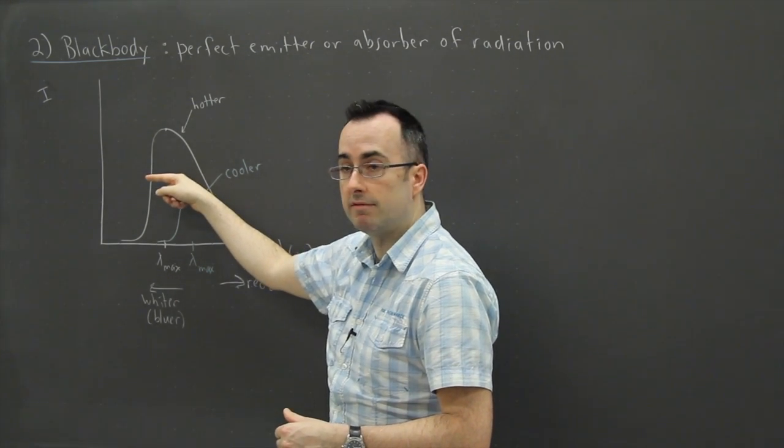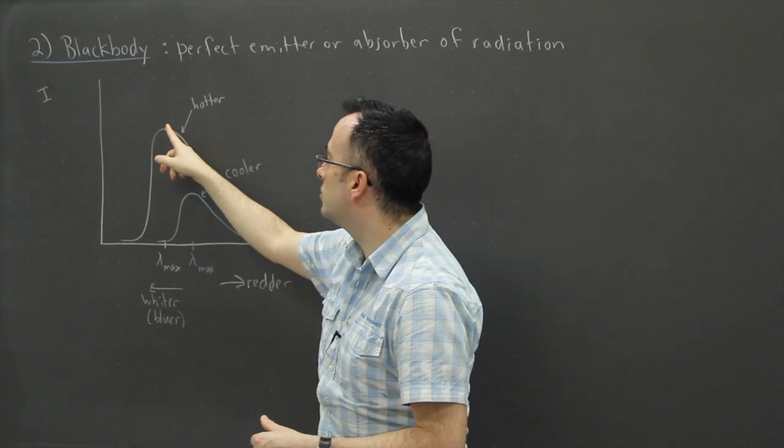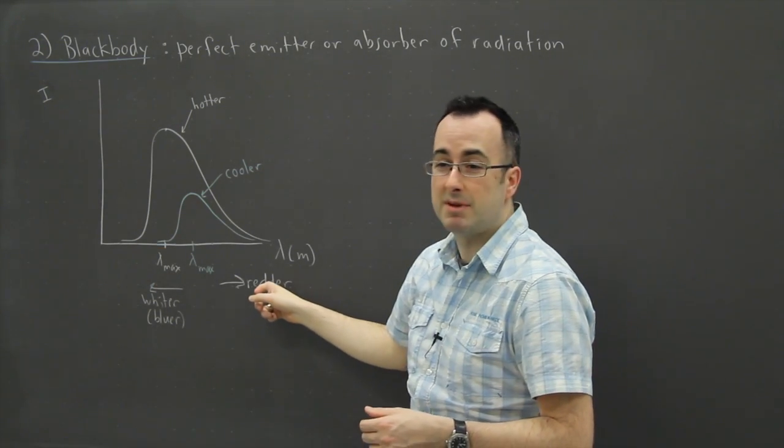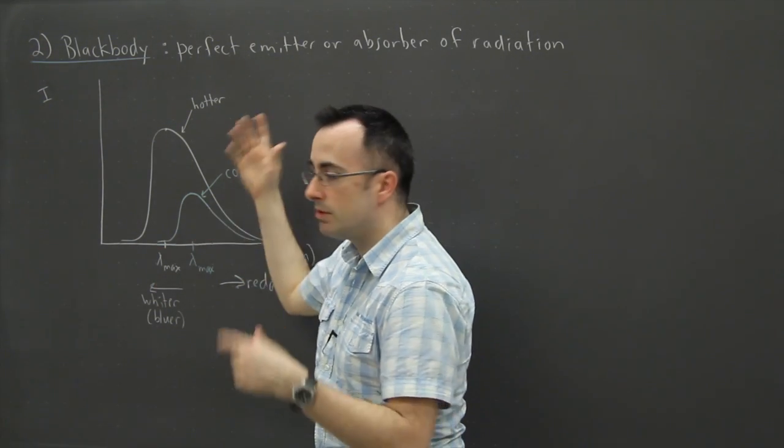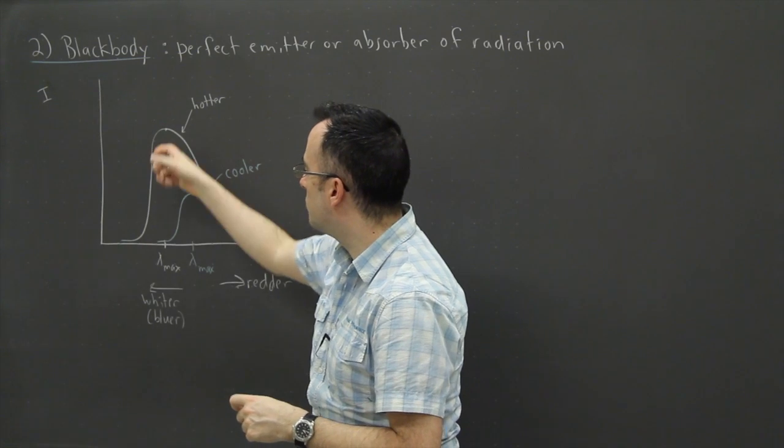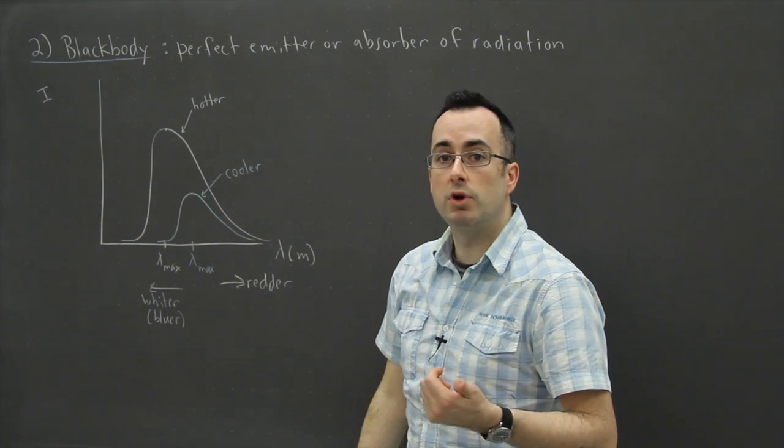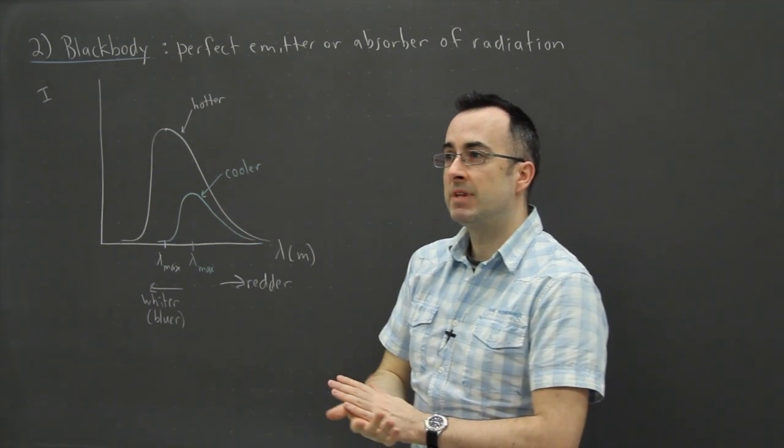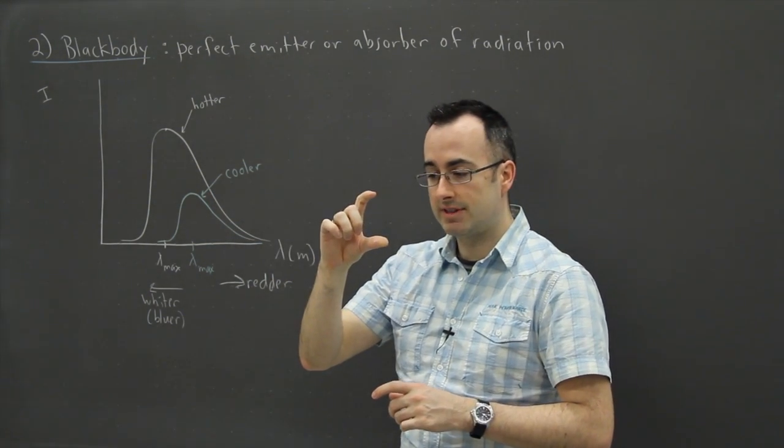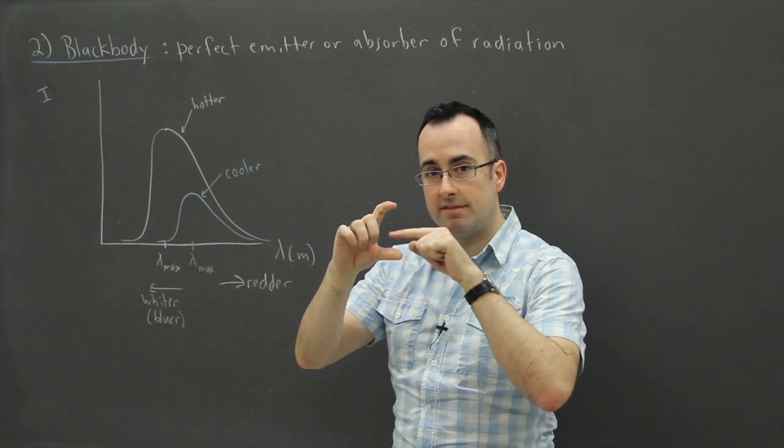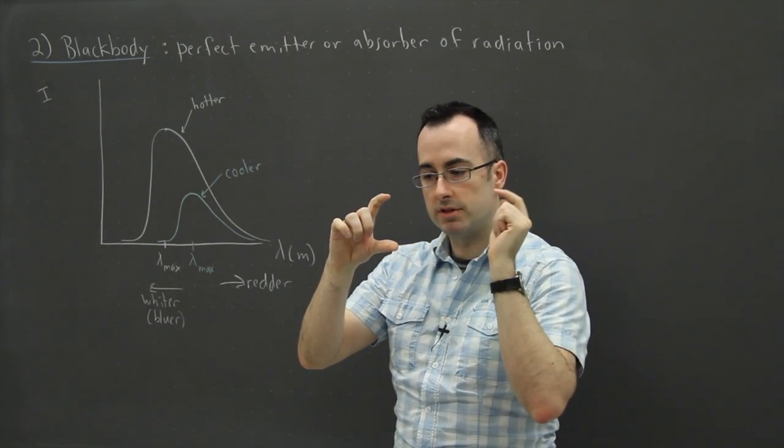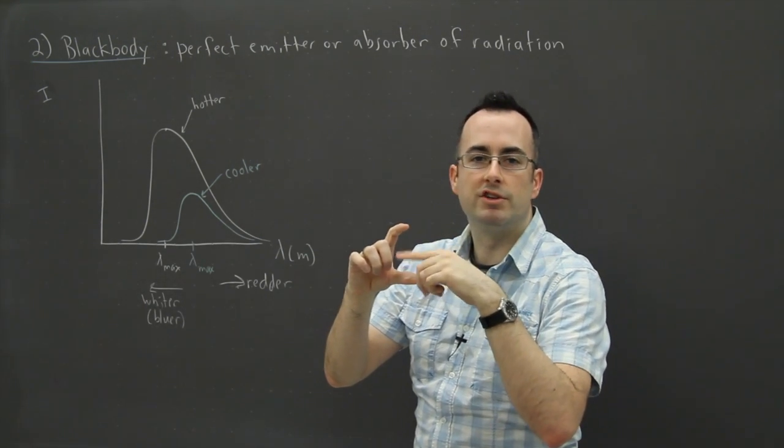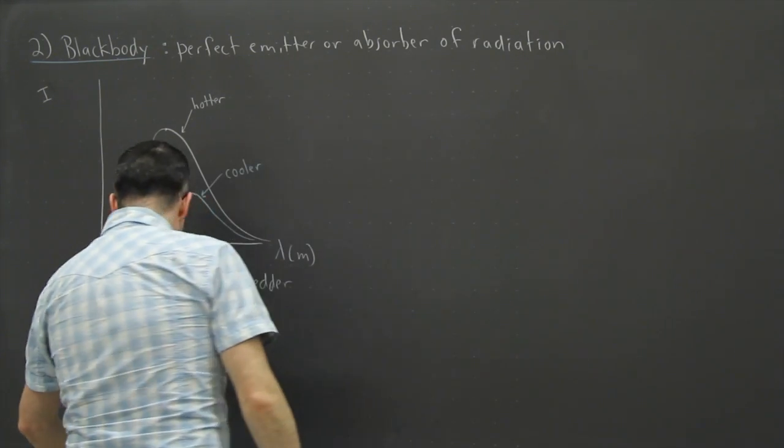Blue for example is like 488 nanometers whereas red is maybe 633 or 636 nanometers, it doesn't matter too much. But the important thing is that hotter things look bluer or whiter and cooler things look redder. If you look at a candle for example, red color is going to be near the base of the candle whereas whiter and bluer is going to be up near the top. There's going to be all the colors in the middle, yellows and oranges and things like that.